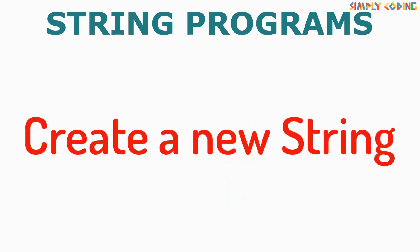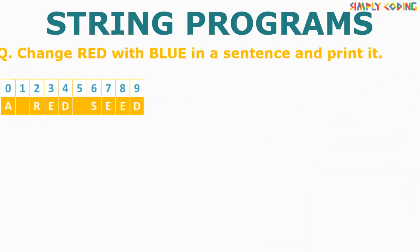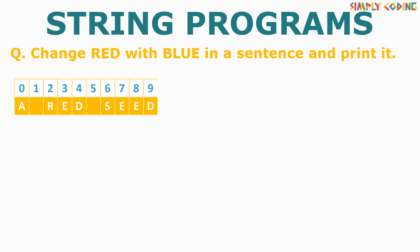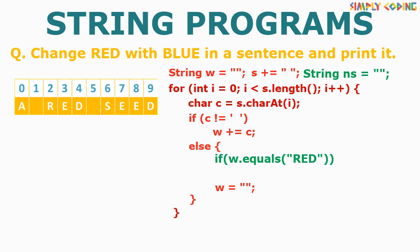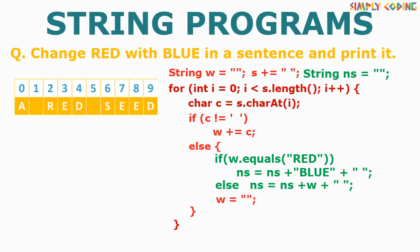Now let's do the third category of programs where you have to create a new string by making some changes to the word. Let's start with the program to change the word 'red' to 'blue' and create a new sentence. Here again we will take our template. This time, since we have to create a new string, we will declare a string variable before the loop. When we get a word, we use an if condition with equals to check if the word is 'red'. If it is, we add 'blue' to the new string; otherwise we add the word as is. We must remember to put a space between words. Once out of the loop, we print the new sentence.